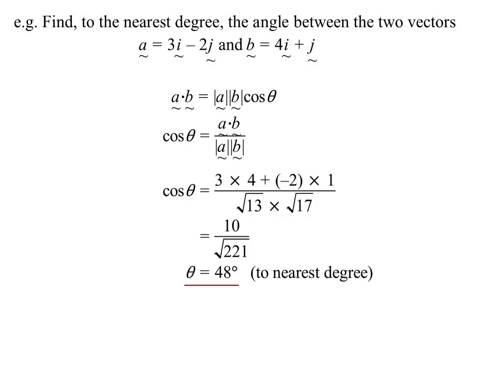Sub in. A dot b would be 3 times 4 minus 2 times 1. The bottom then is the distances of those vectors or the magnitude of those vectors. Root 13, root 17. Play around with it. We get 48 degrees. You know, it's 48 degrees roughly. So to the nearest degree.